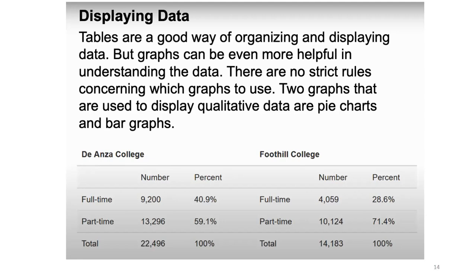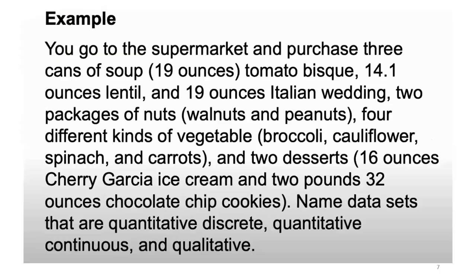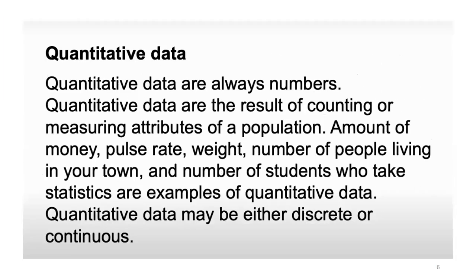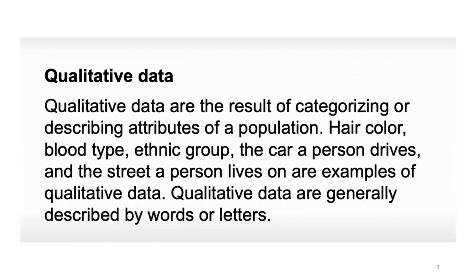Two graphs used to display qualitative data are pie charts and bar graphs. Qualitative data are the result of categorizing or describing attributes of a population — like hair color. As I have already told you, qualitative data describes qualities.